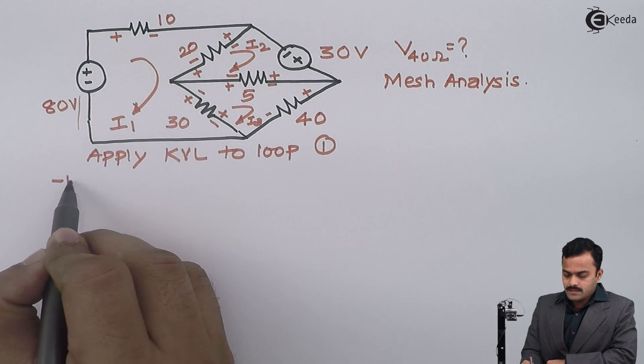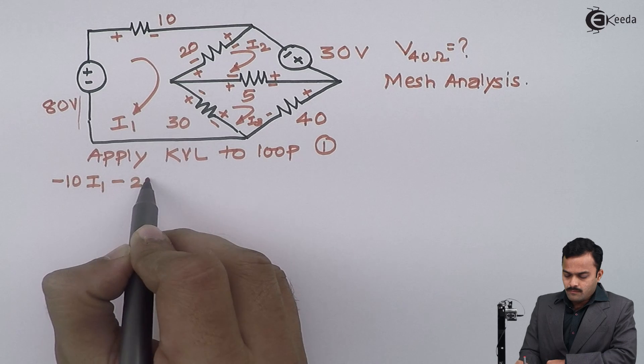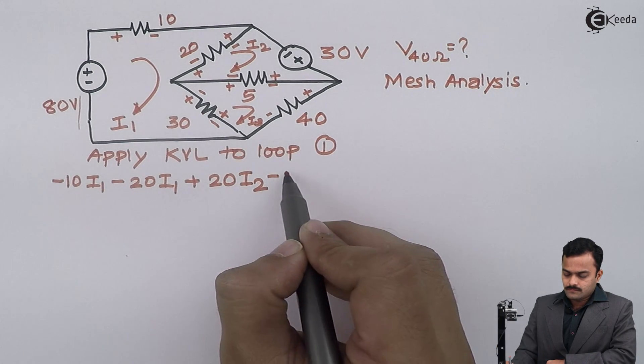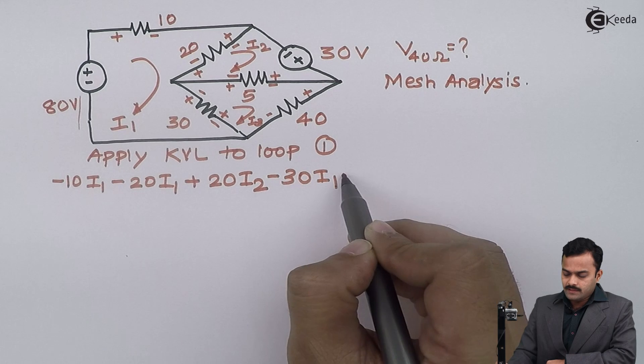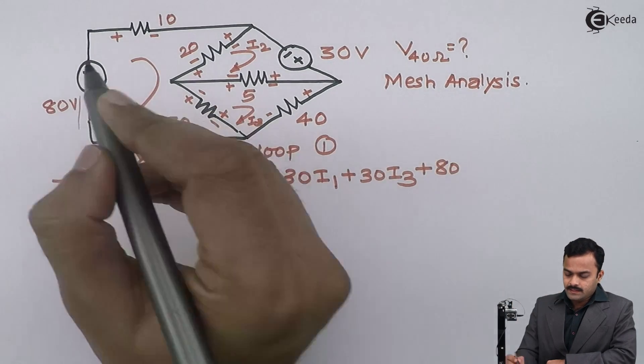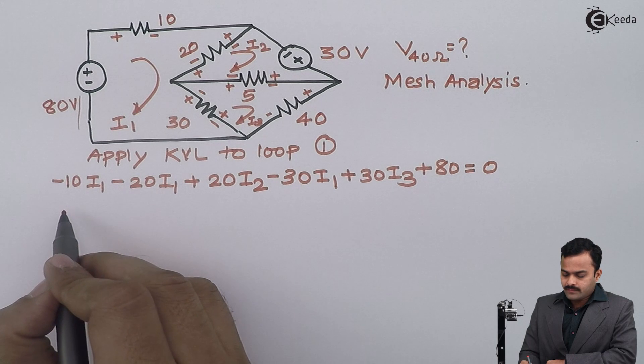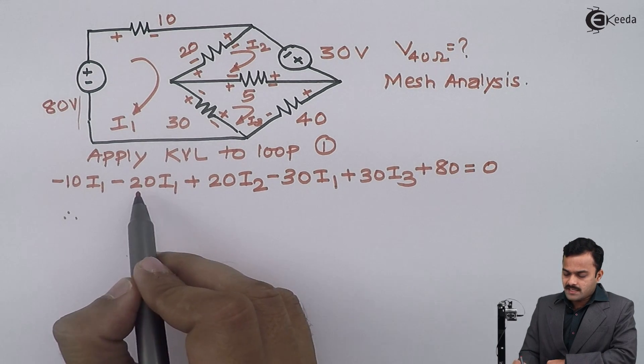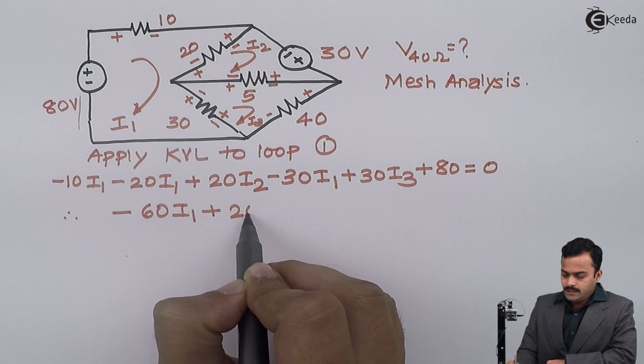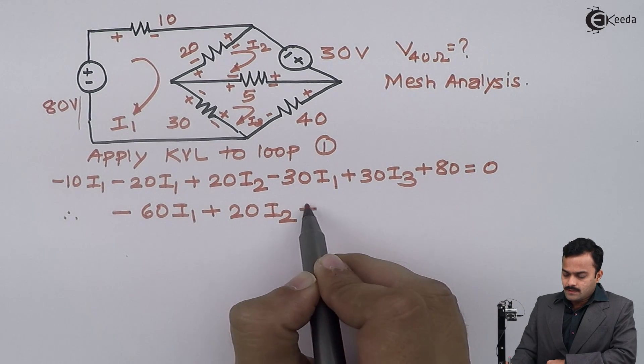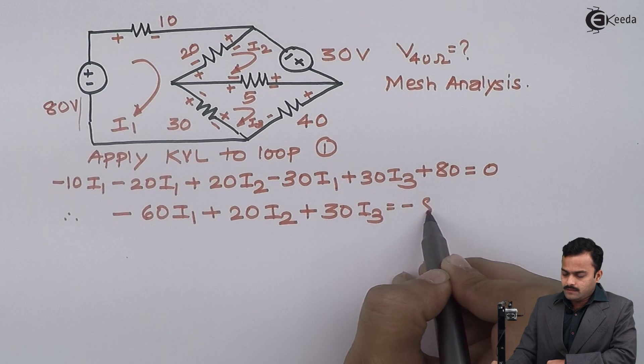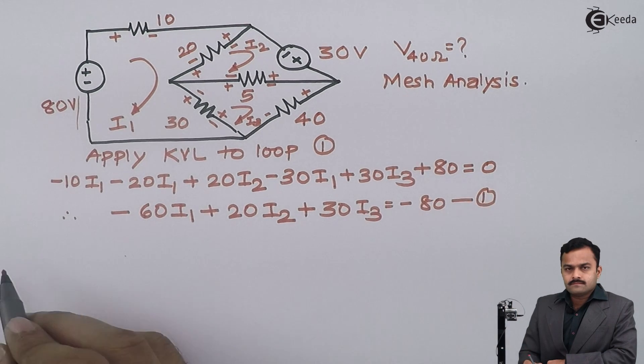So plus-minus, it's minus 10I1 minus 20I1 plus 20I2 minus 30I1 plus 30I3 plus 80 equals 0. And after simplifying, I will have minus 60I1 plus 20I2 plus 30I3. The constant, I will take to the other side, so it is minus 80. Equation number one.